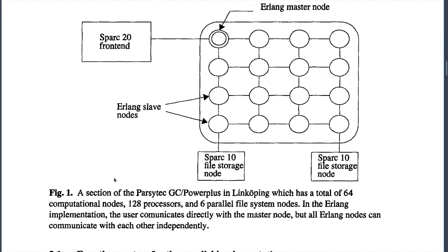This is a figure of a Parsytec GC-Power Plus in Linköping, which has a total of 64 computational nodes, 128 processors, and six parallel file system nodes. In the Erlang implementation, the user communicates directly with the master node, while all other slave nodes communicate with each user independently. This forms a cluster where all nodes can talk together and share information between them.